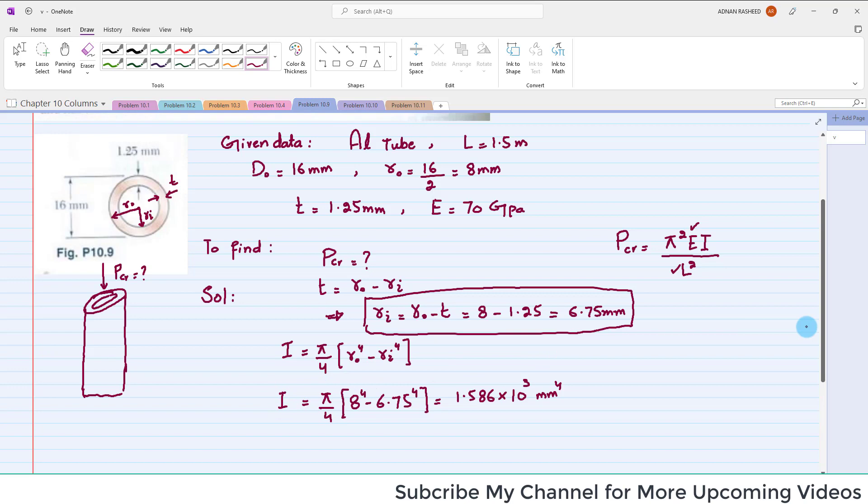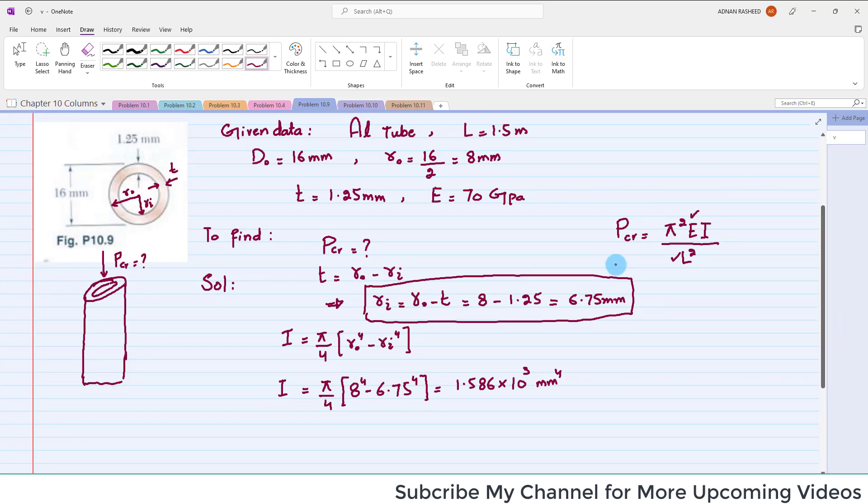If you want to convert it into meters, we will convert it because we will find out the P in terms of Newtons. So I will be equal to 1.586 times 10 to the power minus 12, because this is power 4, so minus 12 plus 3, which is equal to minus 9, and that will be converted into meters to the fourth.